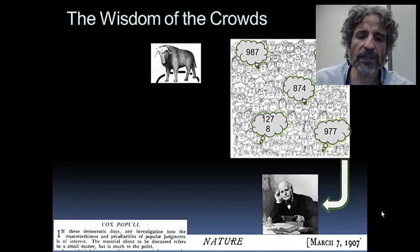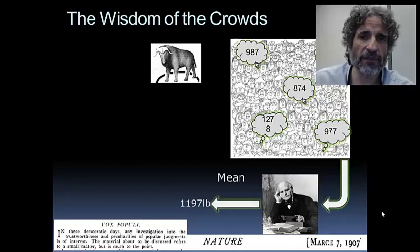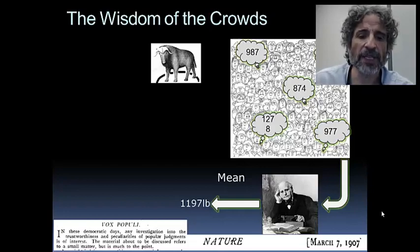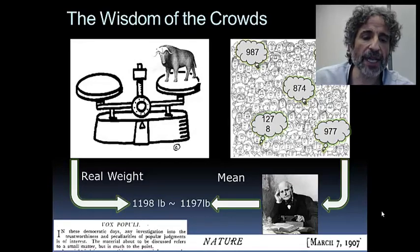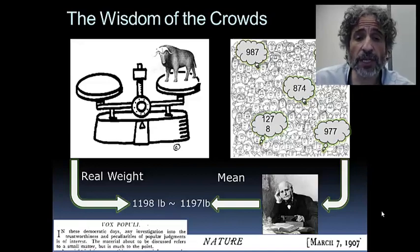Francis Galton decided to see the extent to which any of these people could guess correctly. His prejudice was that probably none of them would predict very accurately. Being one of the founders of statistics, one natural thing was to compute the mean. He computed the mean and found that the mean of all the predictions was 1,197 pounds.